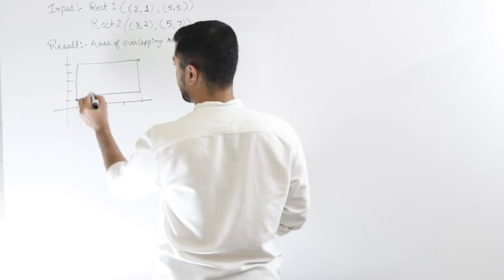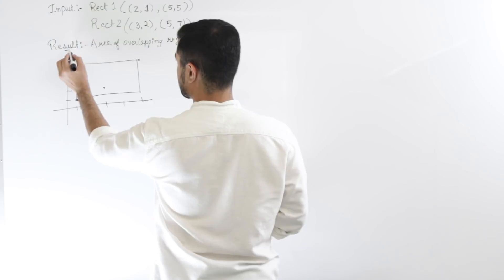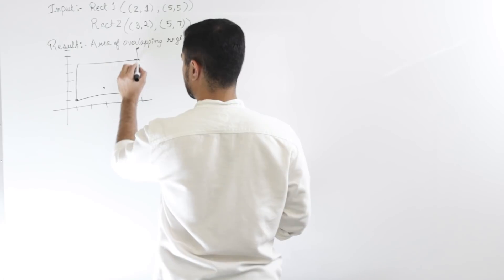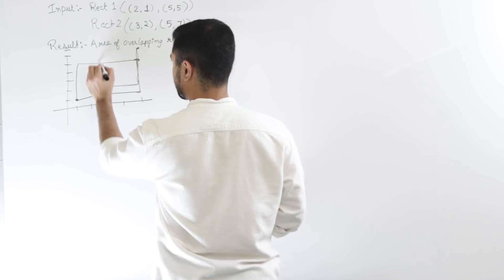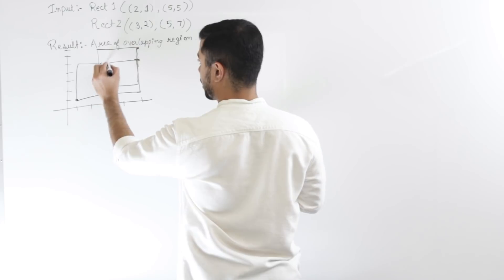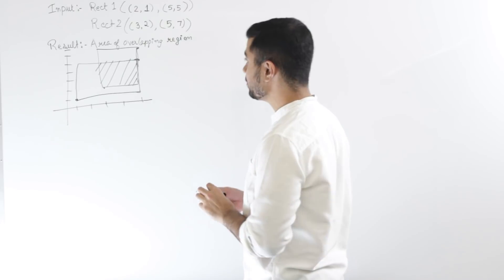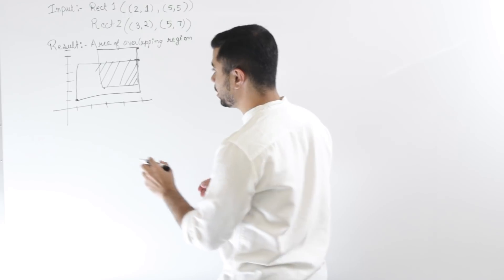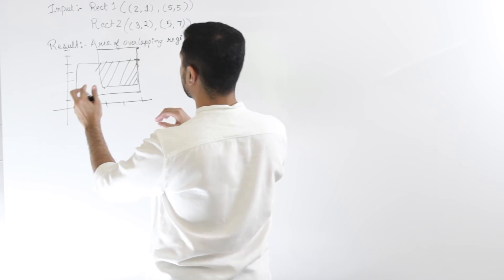The second rectangle goes from (3,2) to (5,7), so one of the edges will be overlapping with the first rectangle. This is what the two rectangles look like, and what I'm looking for is the area of overlap right here.